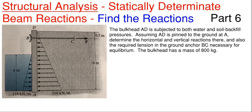What we have here is a picture of a bulkhead AD that is subjected to both water and soil backfill pressures, already calculated for us. Assuming AD is pinned at the bottom, we need to determine the horizontal and vertical reactions at A, and also the required tension force in ground anchor BC necessary for equilibrium. We are also told the bulkhead has a mass of 800 kilograms.